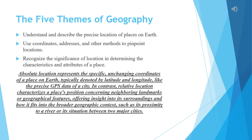First, we have absolute and relative location. Absolute location represents the specific geographic coordinates of a place on earth, typically noted by latitude and longitude, like precise GPS data for a certain city. In contrast, relative location characterizes a place's position concerning neighboring landmarks or geographical features, offering insight into its surroundings and how it fits in the broader geographical context.